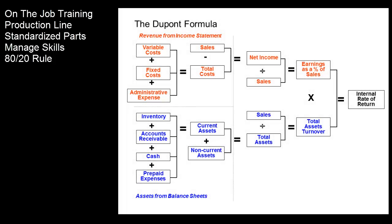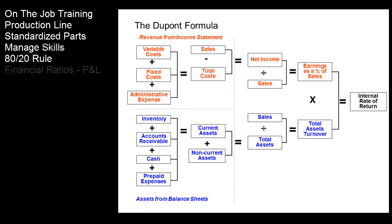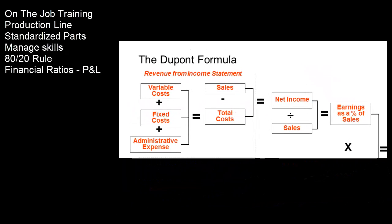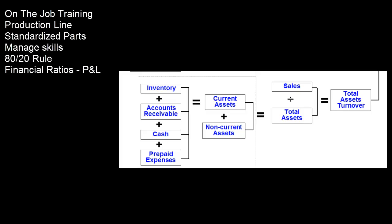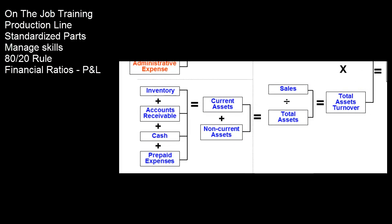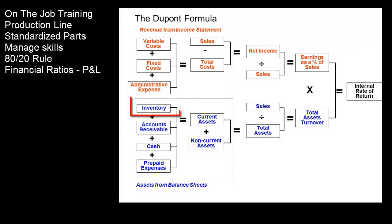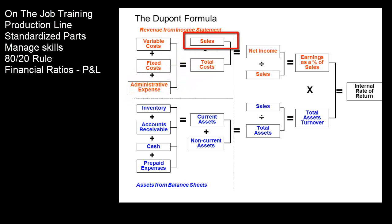For years, Carnegie, Vanderbilt, and Rockefeller just tracked their cash flow. But like Sloan, the DuPonts began to use financial ratio analyses for profitability: profit margins, operational efficiency, asset turnover, and financial leverage — debt to equity. Their professional managers worked to optimize their part of the formula. Today, we call that managing by your P&L.